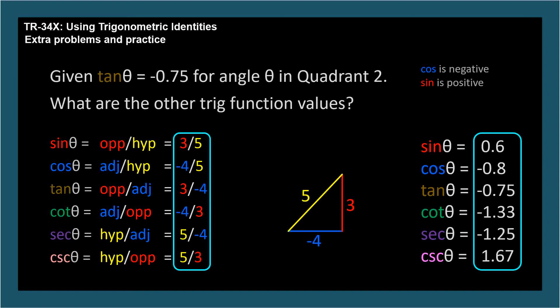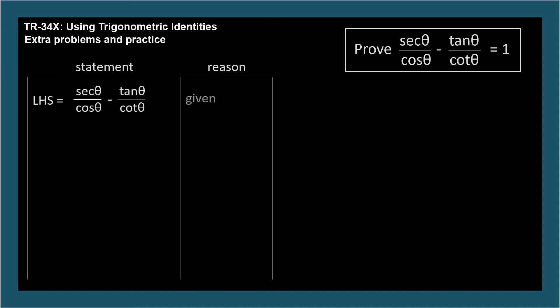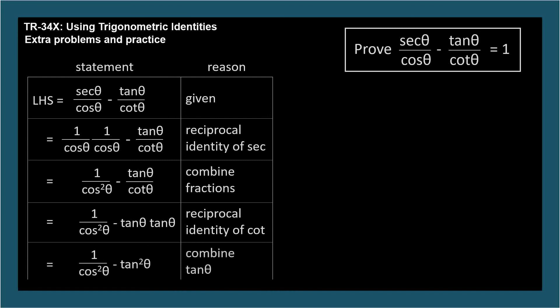Let's flex our muscles with one more proof. Prove secant theta divided by cosine theta minus tan theta divided by cotangent theta equals 1. We'll keep our work orderly and easy to grade by using the two-column proof format. The left-hand side is clearly the most complicated looking side, so we'll start with the left-hand side as given and manipulate it until it equals 1, the right-hand side. Let's start by rewriting secant theta as 1 over cosine theta by the reciprocal identity of secant. We can combine the fractions in the left term to get 1 over cosine squared theta. In the other term, let's rewrite cotangent theta as 1 over tangent theta by the reciprocal identity of cotangent. Now we can combine the tangent terms to tangent squared theta.